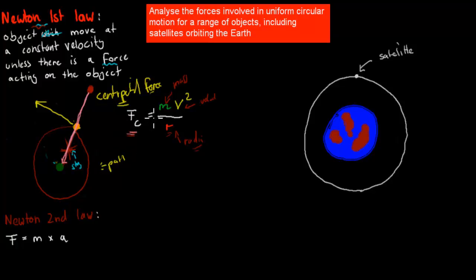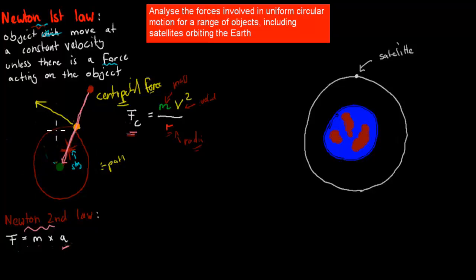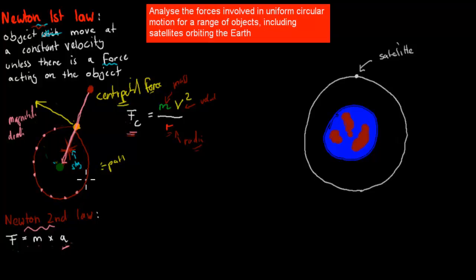We also need to look at the actual acceleration involved. If you remember Newton's second law — force equals mass times acceleration — if we have the centripetal force and the mass, we can also find an acceleration. This might not look like the object is accelerating since it appears to go at the same speed. But remember, acceleration has both magnitude and direction since it's a vector. At every single point of the circular path, the direction is changing, which means the object has an acceleration even though its speed may be constant.